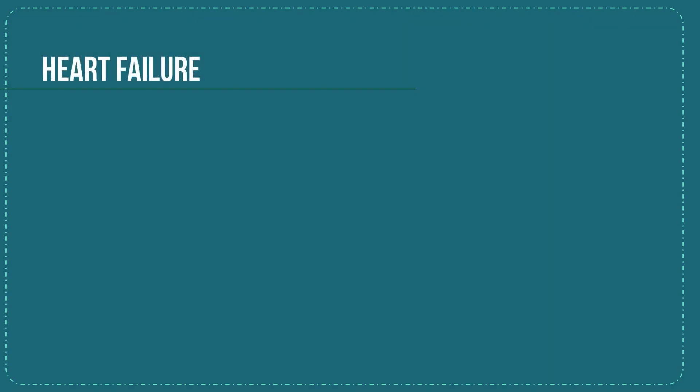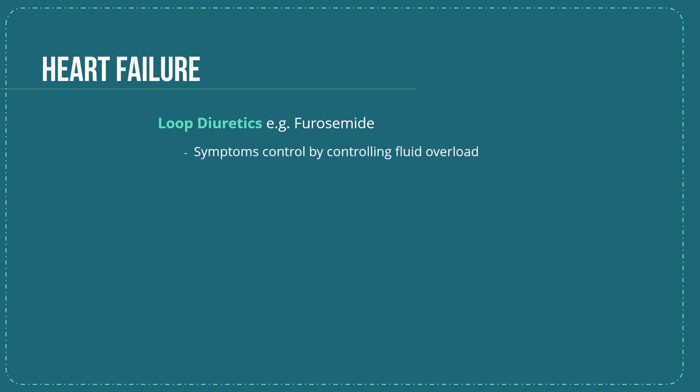There are many drugs used in the management of heart failure. Some of them have mortality benefits, others are only used for symptom improvement. We start with loop diuretics such as furosemide. Although loop diuretics play an important role in managing fluid overload and are used in almost every patient with heart failure for symptom control, they have no long-term reduction in mortality.